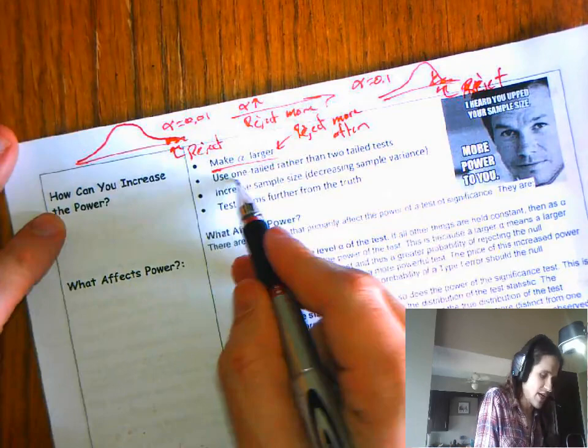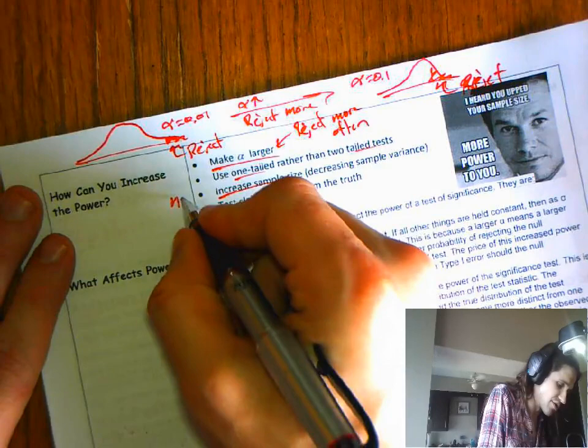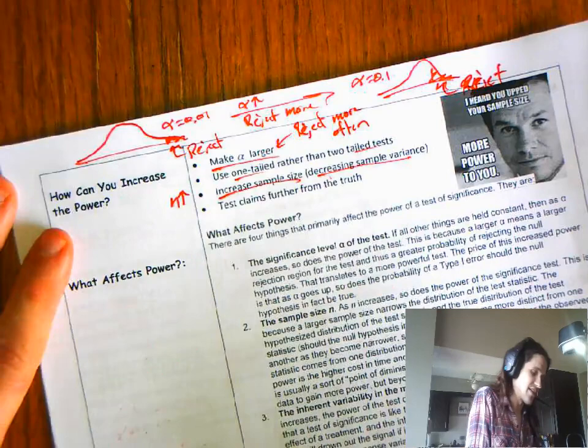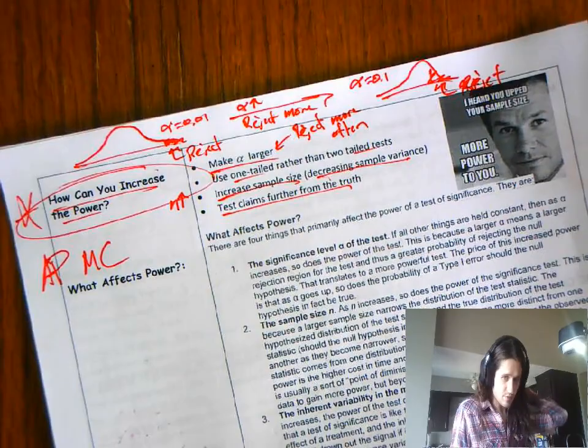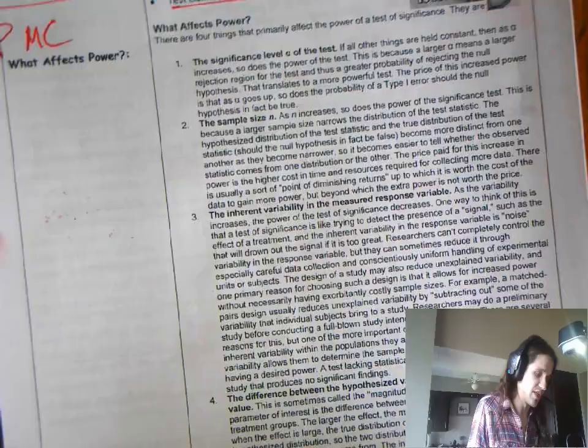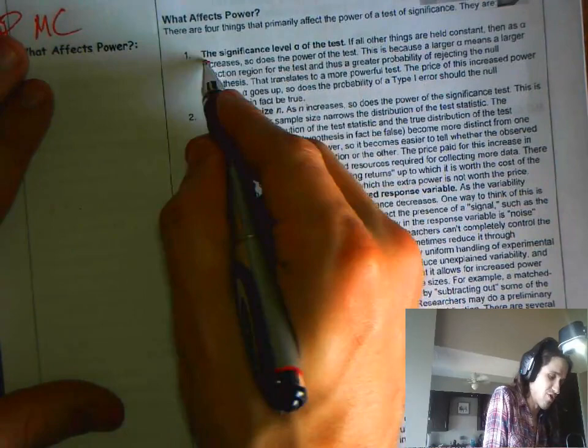One-tailed rather than two-tailed. Yeah, that one's fine. Increase your sample size. Make n larger. Because what happens when you make n larger is you just decrease sample variance. And the last thing we could do is test claims further from the truth. How can you increase power? You are going to have questions about this. Put a little star by it. AP loves this as a multiple-choice question. There's a lot to read here. You should read through it. But in essence, you can reject more by changing alpha, increasing alpha,